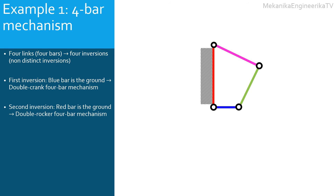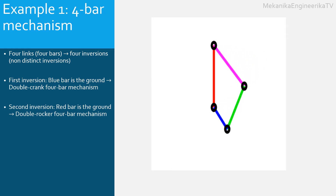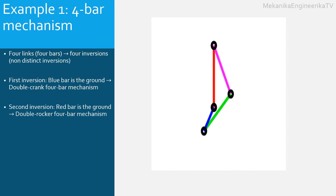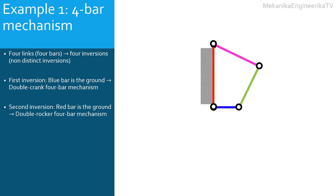In this second inversion, the red bar is grounded. The blue, magenta, and green bars are rotating. Mostly, the blue and the magenta bars are one the input and the other is the output. The green bar is the coupler. Here, the blue and magenta bars cannot undertake a full 360-degree rotation. They are called rockers. This mechanism is called a double rocker four-bar mechanism. The kinematic diagram of the second inversion will look like this, as only the connections with the ground are represented.